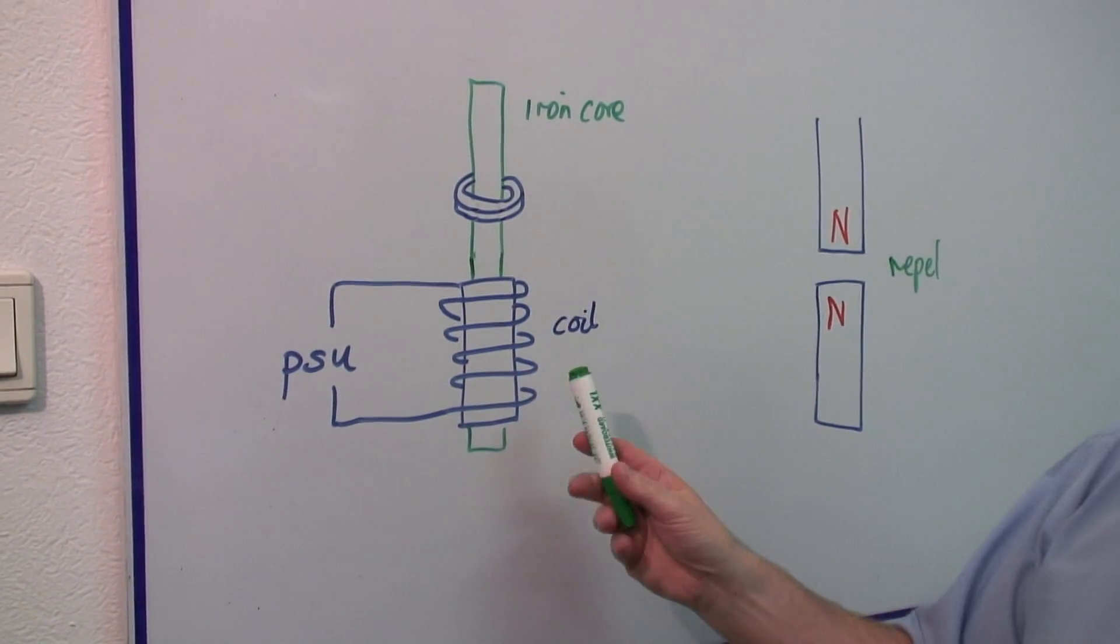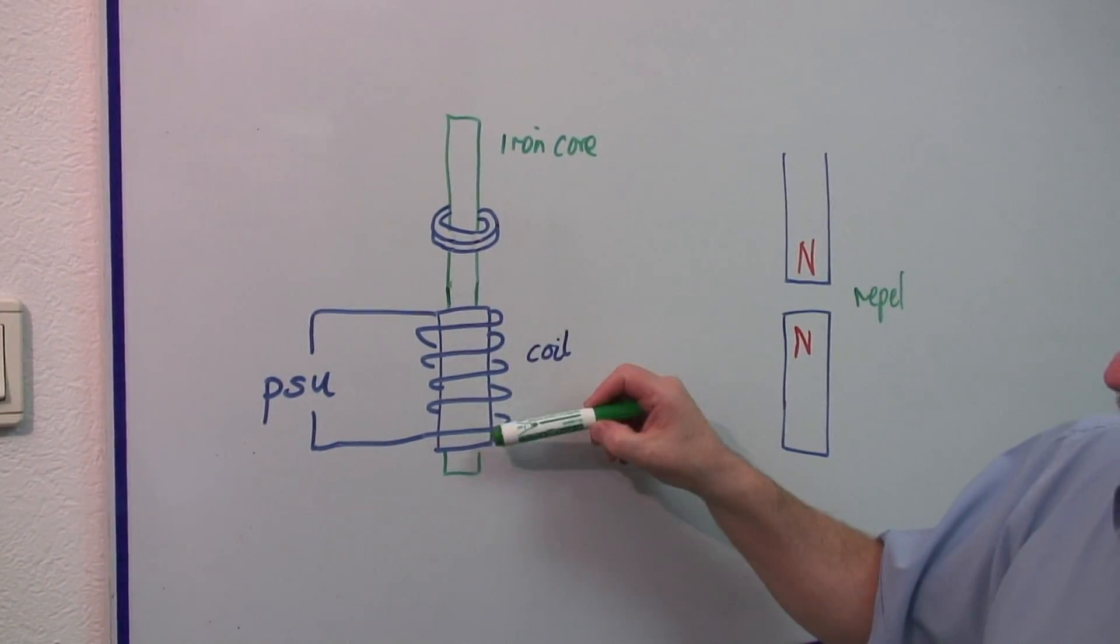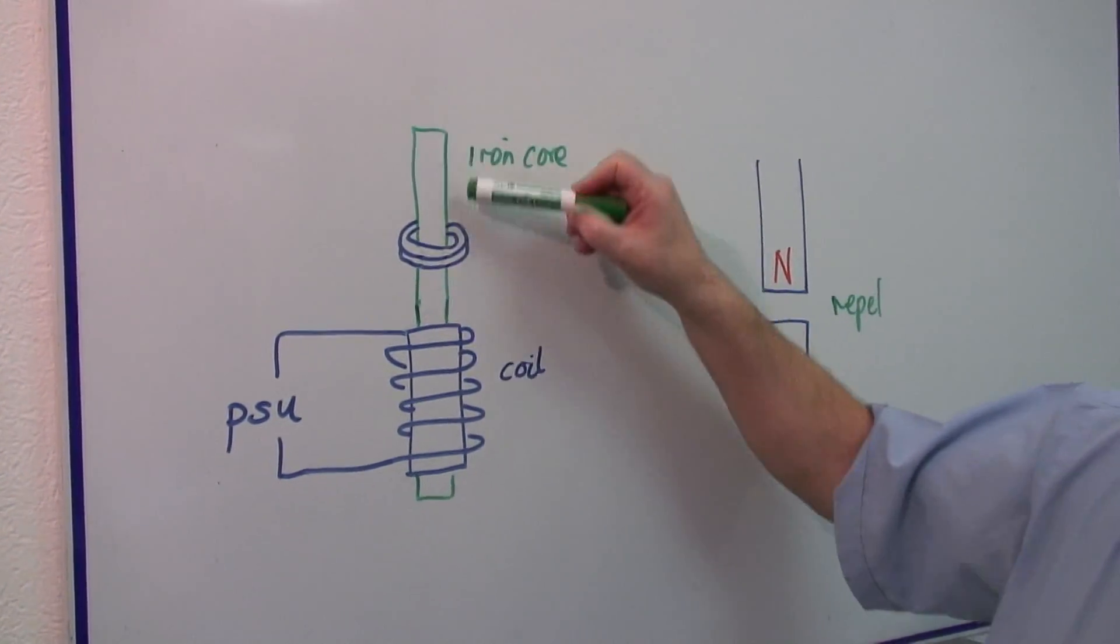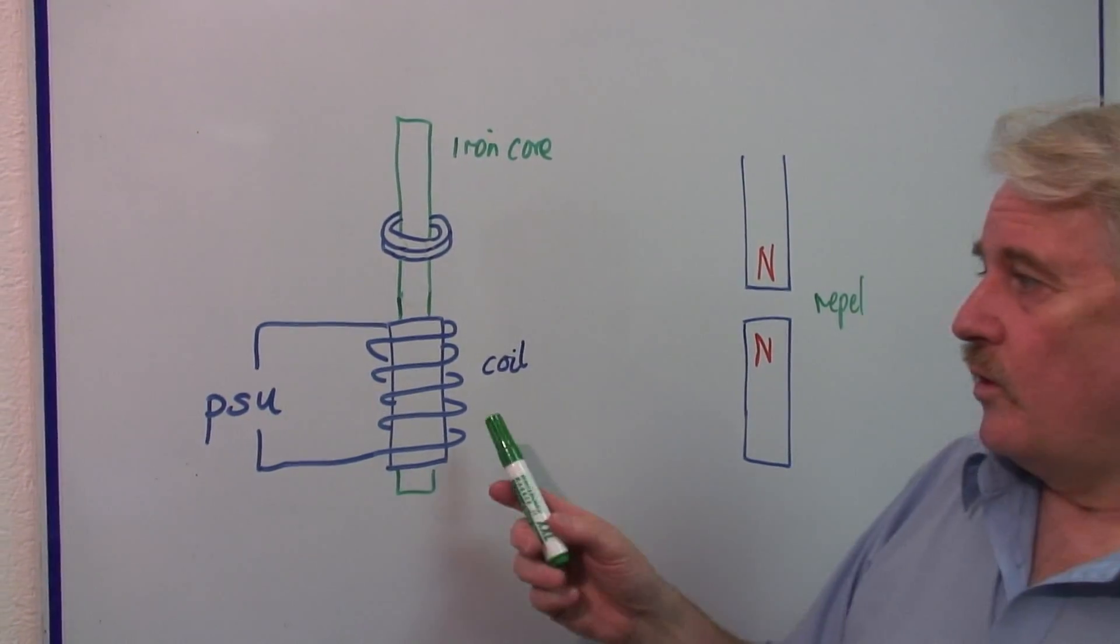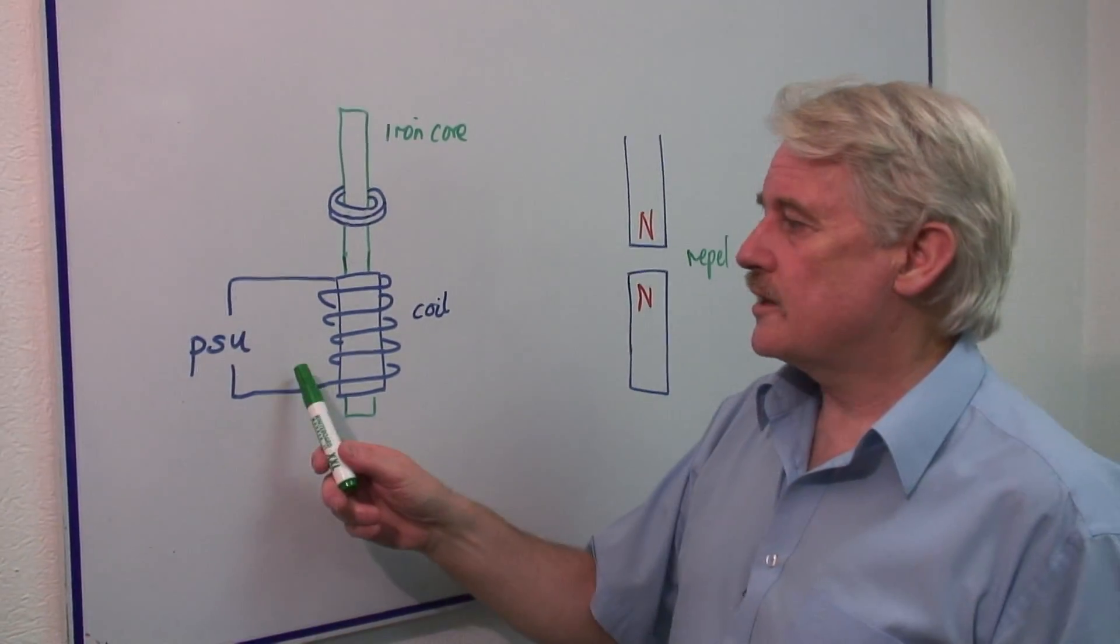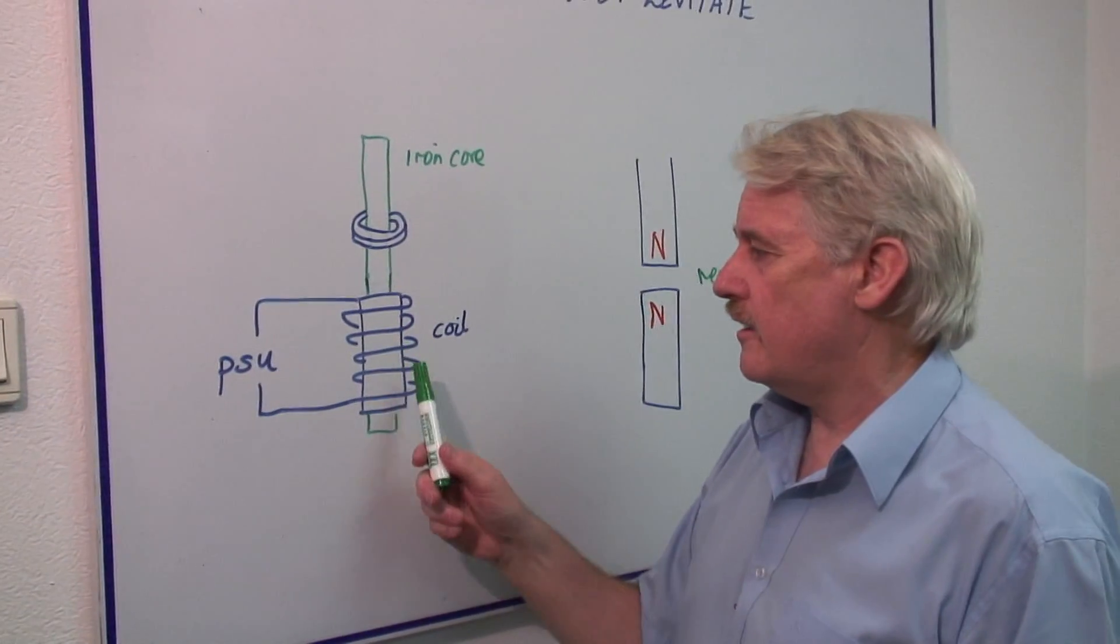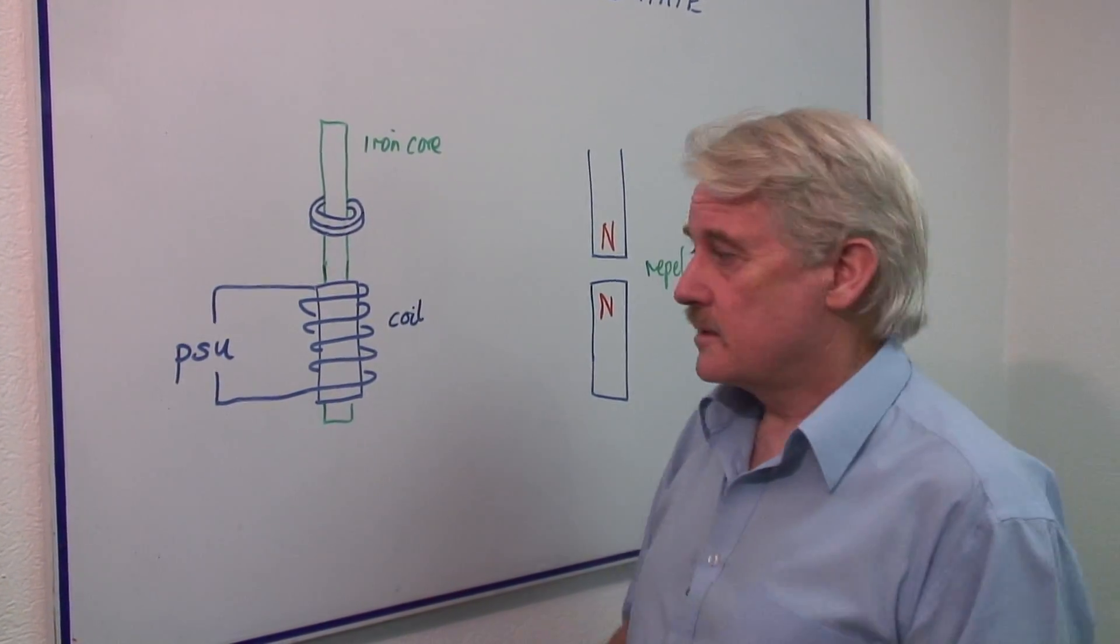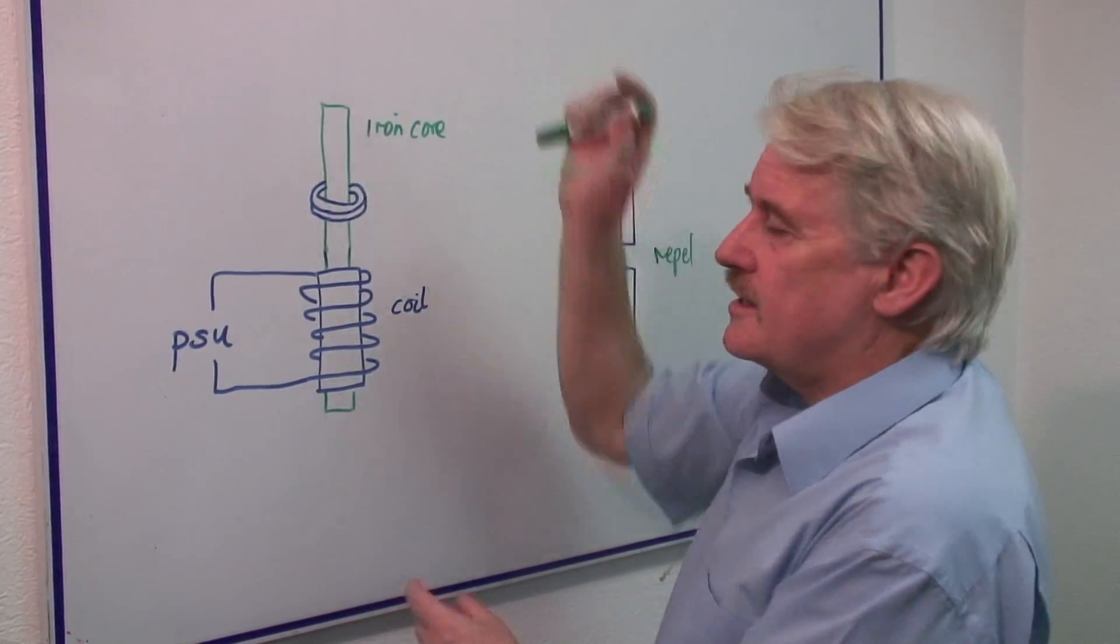And here we have an electromagnet. It's a cardboard coil with a wire wrapped around it. But through the center we've put a bar of iron. Now what that means is the iron makes the magnetism much stronger. When I switch on the electric current here, it makes the bar magnetic. The magnetism is concentrated in the iron bar.